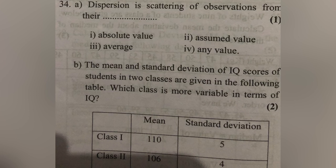Class 1 has x-bar equal to 110 and standard deviation sigma equal to 5. Class 2 has x-bar equal to 106 and standard deviation sigma equal to 4. The coefficient of variation CV equals sigma divided by x-bar multiplied by 100.